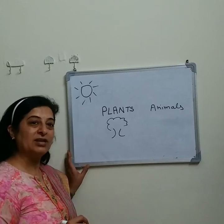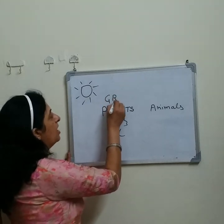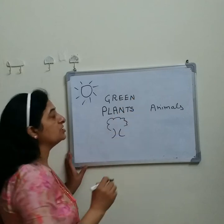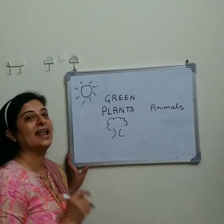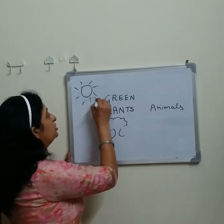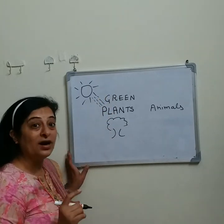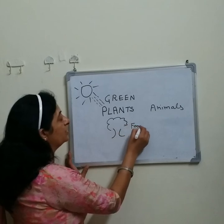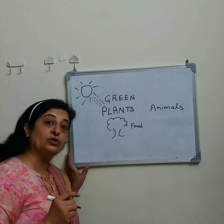So let us find out how. As you know, green plants prepare their food through the process of photosynthesis in the presence of sunlight. Green plants take the energy from the sunlight and convert it into food through the process of photosynthesis.